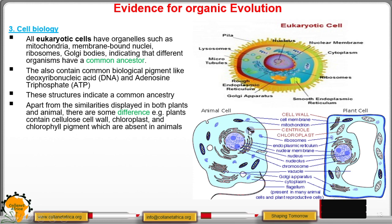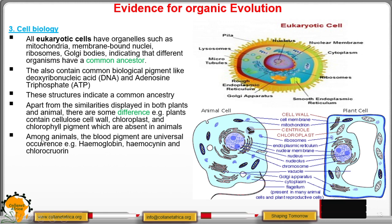However, the centriole is present in an animal cell but absent in a plant cell. The centriole is an organelle involved in cell division as well as the formation of cilia and flagella. Among animals, blood pigments are of universal occurrence. For example, hemoglobin, hemocyanin, and chlorocruorin.